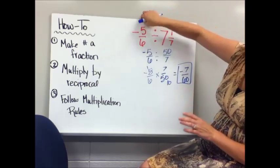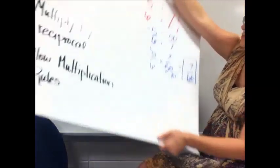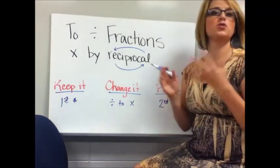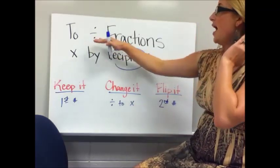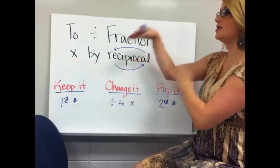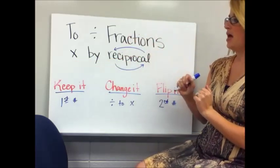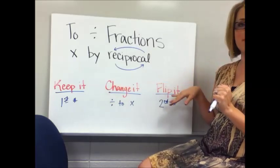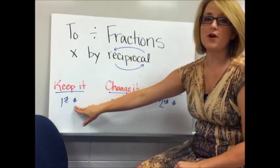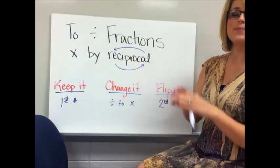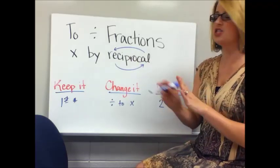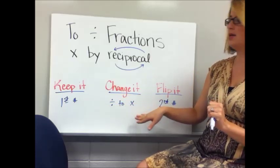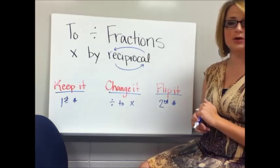To condense this: to divide fractions, you multiply by the reciprocal. A helpful catchphrase is keep it, change it, flip it. You keep the first number — in our example, negative 5 over 6 stayed the same. You change the operation from division to multiplication. Then you flip the second number over.